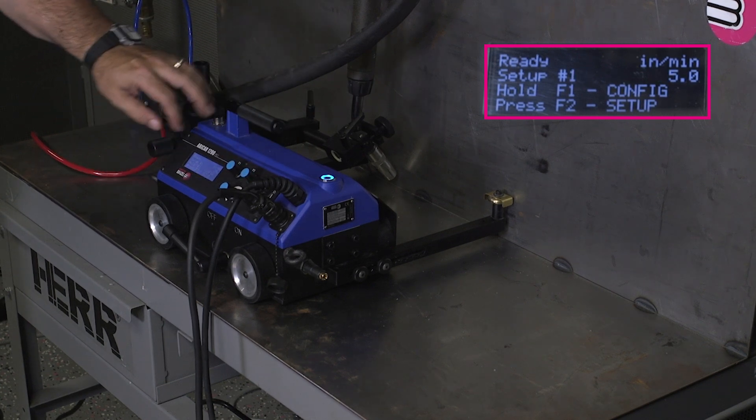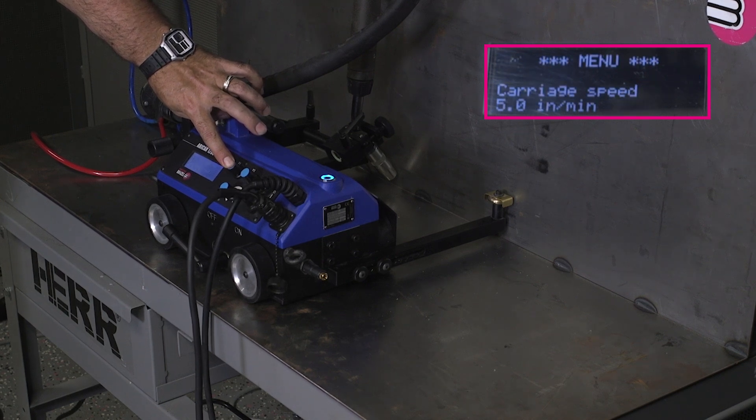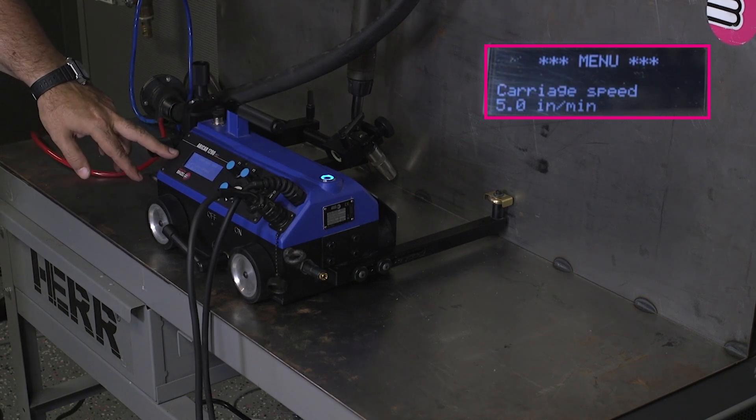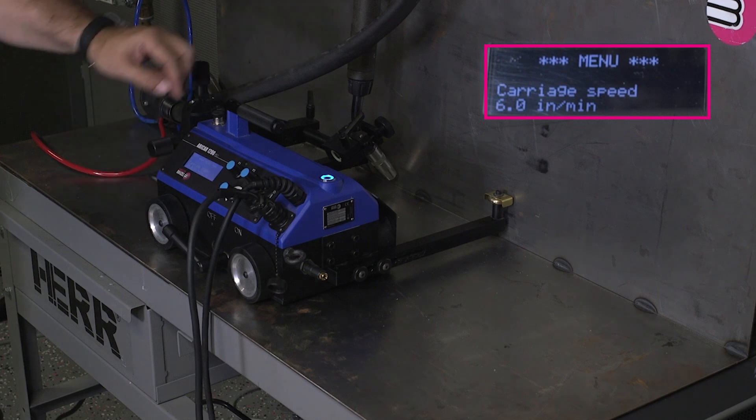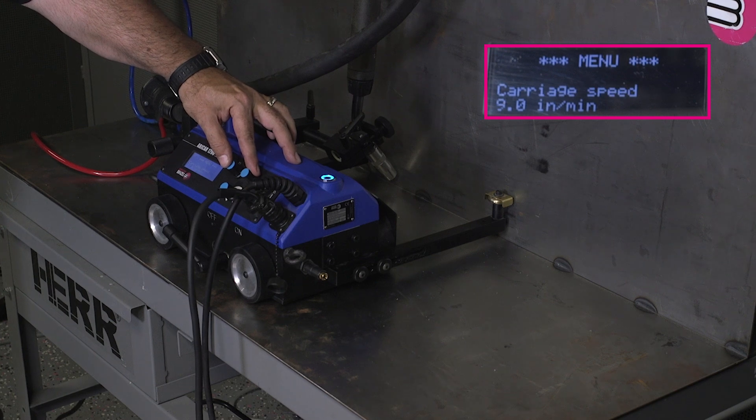Hold F1 to configure the first. Hold it down. Now we're going to get to our first selectable screen. It's going to set carriage speed and we want to set it at 12 inches per minute.